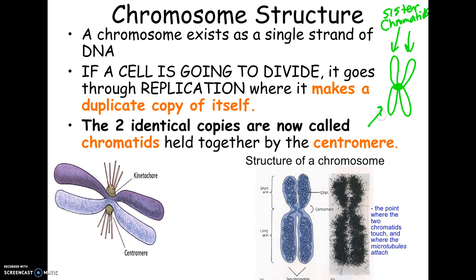If you were to take a brain cell and condense the DNA, those chromosomes would not look like X's — they would look like sticks. Since that cell is not planning on dividing, there's no reason for the chromosome to make an extra copy of its information. Chromosomes in a cell that's not going to divide would just look like a stick. The X shape is the purpose of mitosis, which we'll talk about next week.